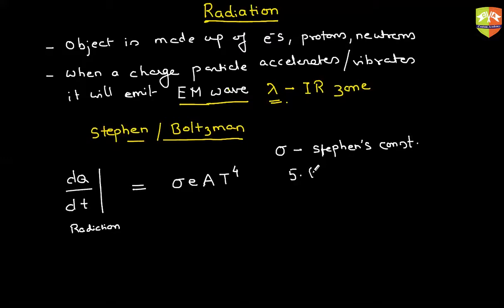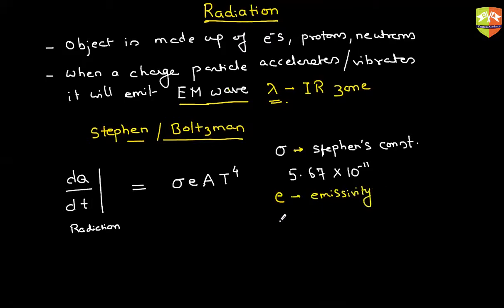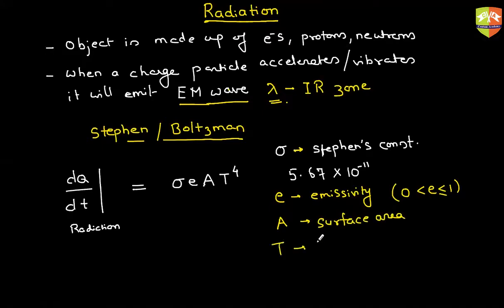The value of sigma is 5.67 — we will come back to the units of sigma. Let me define everything else. 'e' is the emissivity; it has no dimensions, it is a fraction between 0 and 1. 'A' is the surface area, and 'T' is the temperature of the surface.